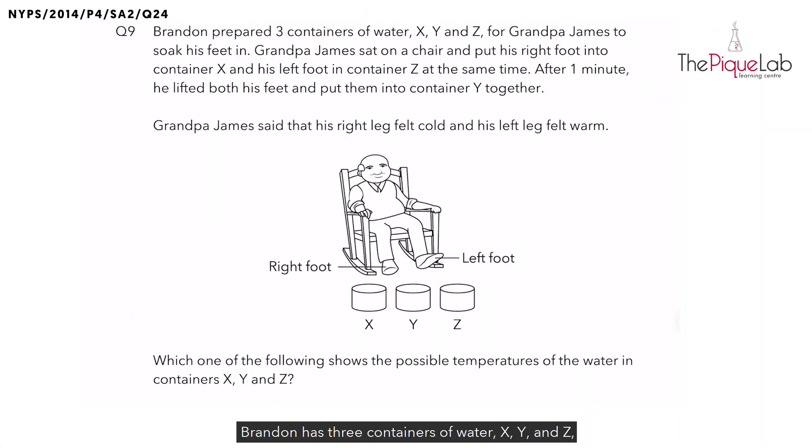Brennan has three containers of water X, Y, and Z for Grandpa James to soak his feet in. Grandpa James sat on a chair and placed his right foot into container X and his left foot into container Z. After some time, he lifted both his feet and placed them together in container Y.